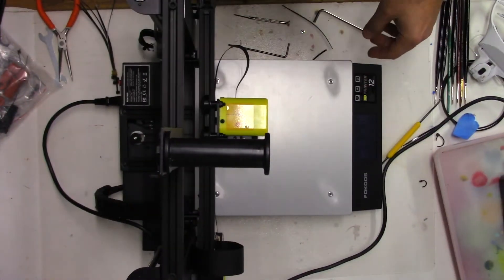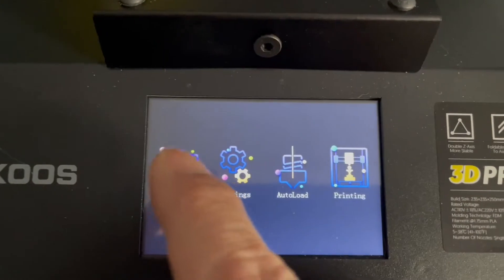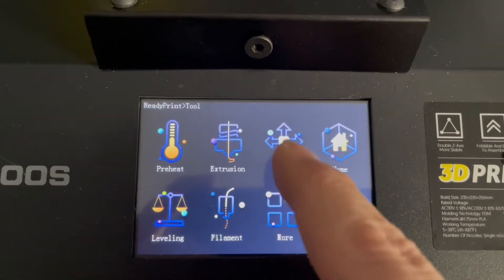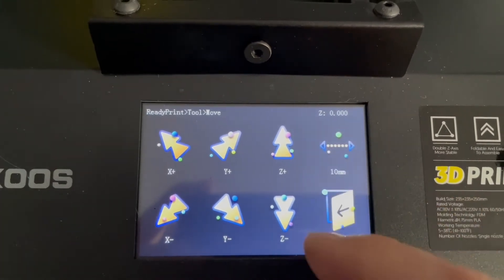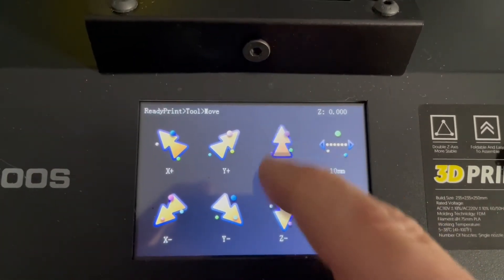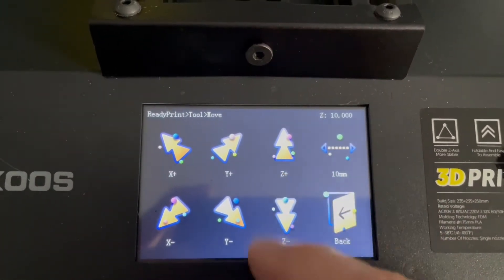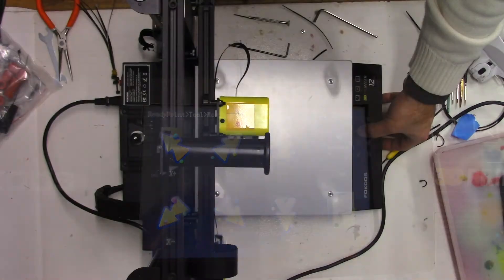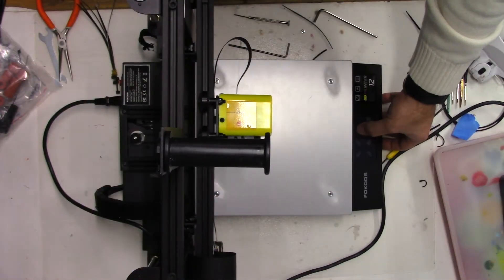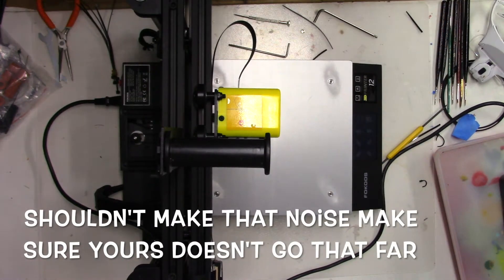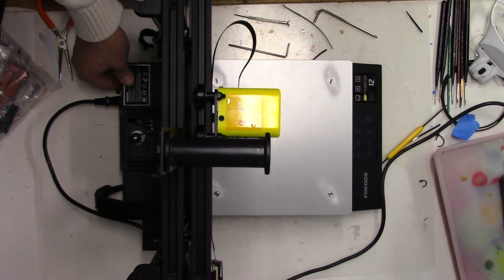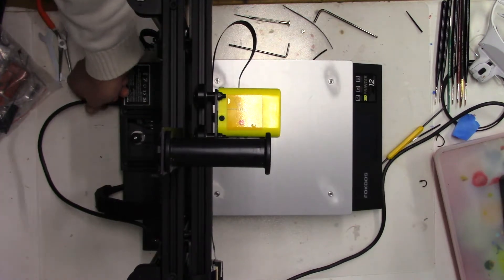Alright, so let's first start by going into the menu, go to tools and go to move and we're going to move this up in the Z axis and I'm going to go all the way up and I'm going to change it over to 10 millimeters so we can move this up and I'm going to keep moving it up until it gets to the top. Alright, that's as far as it'll go. So now we'll power off the machine, unplug it.